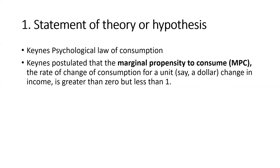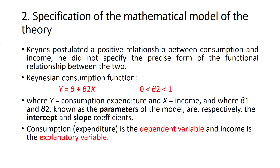The first step is the statement of theory or hypothesis. We take the example of Keynes' psychological law of consumption. Keynes postulated that the marginal propensity to consume (MPC) — the rate of change of consumption for a unit, say a one-dollar change in income — is greater than zero but less than one. This means if a person's income increases, consumption also increases, but not in the same proportion.